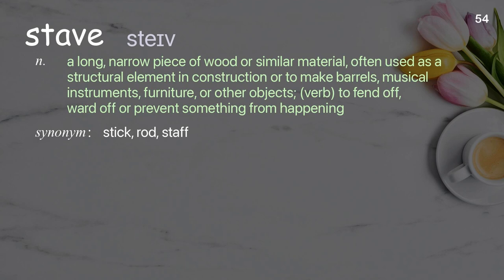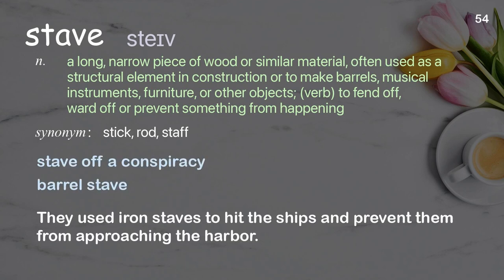Stave: a long, narrow piece of wood or similar material, often used as a structural element in construction or to make barrels, musical instruments, furniture, or other objects. Verb: to fend off, ward off, or prevent something from happening. Examples: stave off a conspiracy, barrel stave. They used iron staves to hit the ships and prevent them from approaching the harbor.